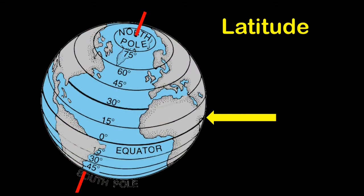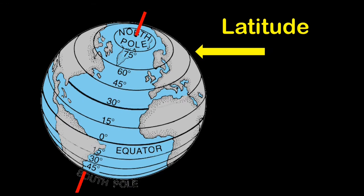Lines of latitude run perpendicular to the Earth's axis and measure how far north and south you are from the equator — the line around the middle of the Earth. Lines of latitude lie parallel to each other. Notice as you go north and south from the equator, these circles get smaller, but they are always the same distance from each other. Lines of latitude are located by going from 0 degrees to 90 degrees from the equator to the poles, and are denoted as being either north or south of the equator, depending on what direction they lie.